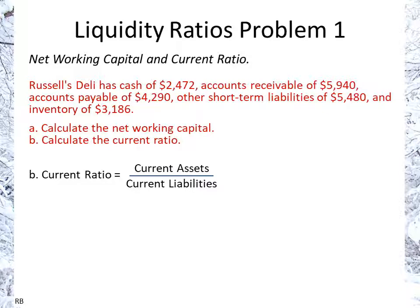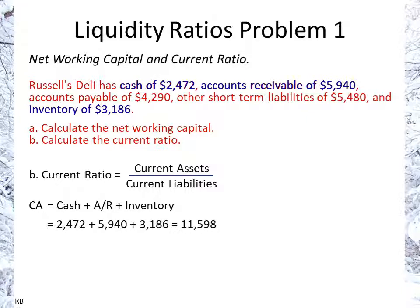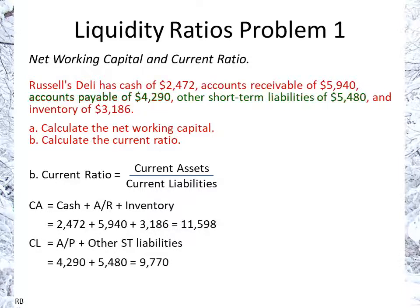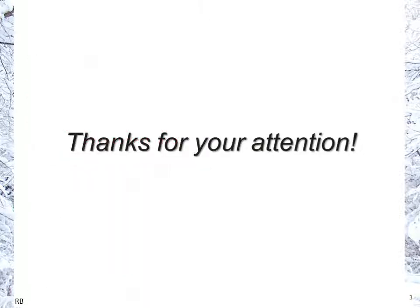We have the numbers already: cash, accounts receivable, and inventory give us current assets of 11,598. Current liabilities are 9,770. We divide one by the other and that gives us a current ratio of 1.19. Thank you for your attention and I hope that helped.